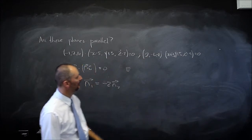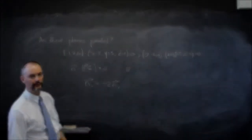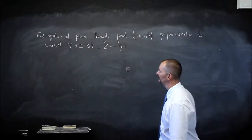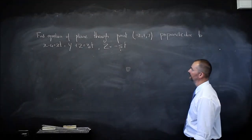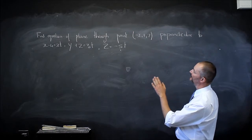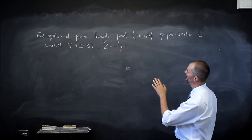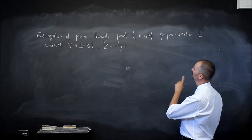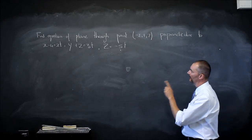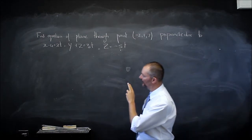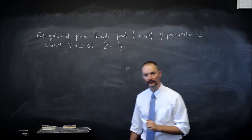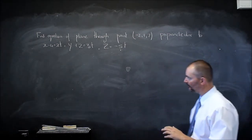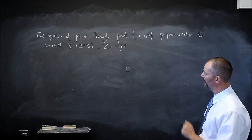Now for this next problem, which might seem difficult at first glance, we must find an equation of a plane through a point, perpendicular to a line, but we are given the line in parametric coordinates.